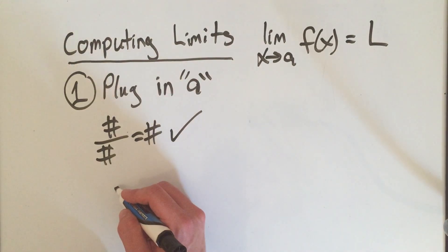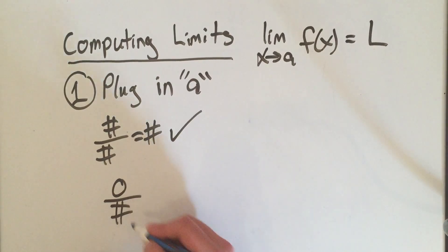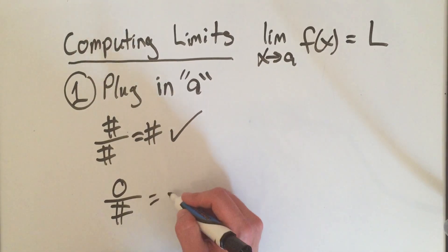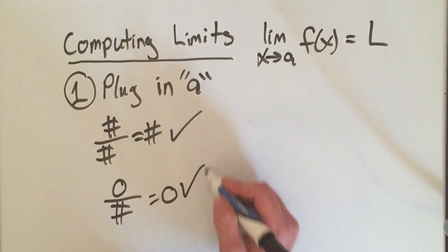Or you could get zero over a number, which is zero, and then you'd be done.